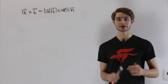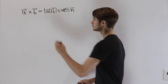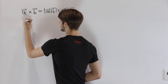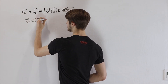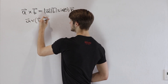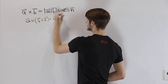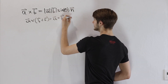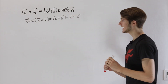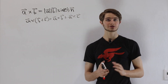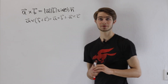In this video, we're going to figure out why the cross product is distributive — in other words, why A cross (B plus C) is equal to A cross B plus A cross C. In order to do that, we're going to start with a simplified version of this idea.